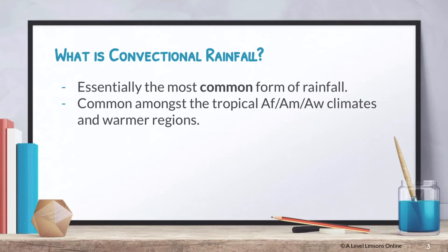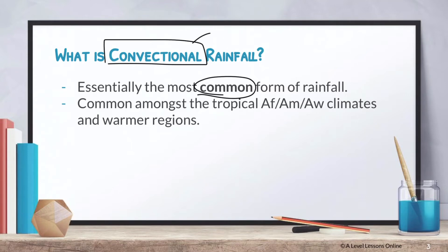So firstly, what is convectional rainfall? Essentially, they are the most common form of rainfall. As the name suggests, it implies convectional activity. When you look at convectional rainfall, you're looking at rainfall caused by intense convectional activity.